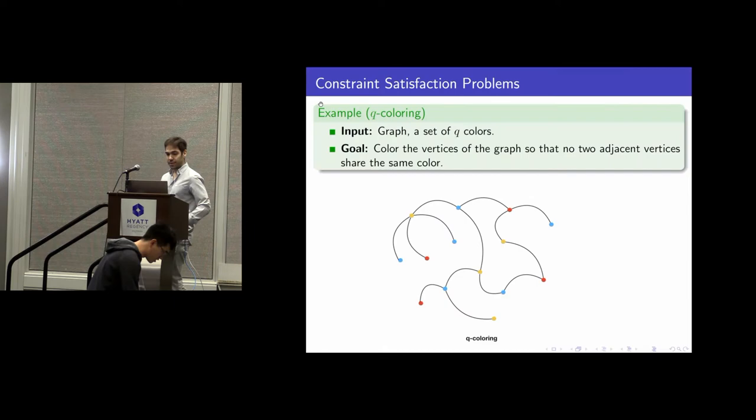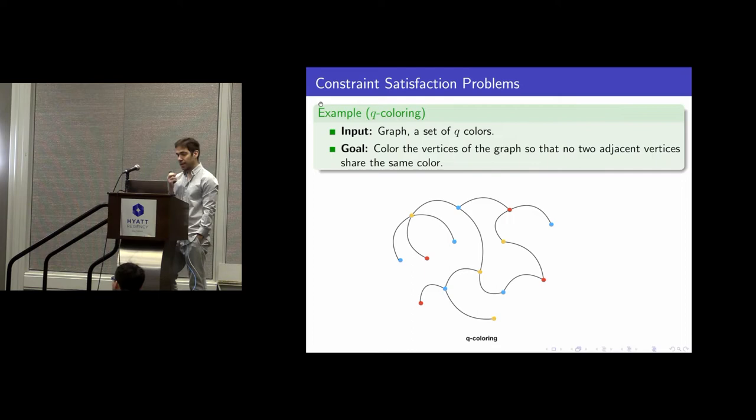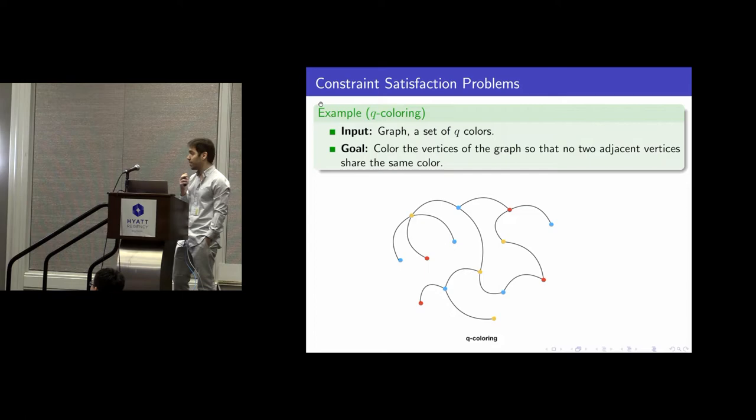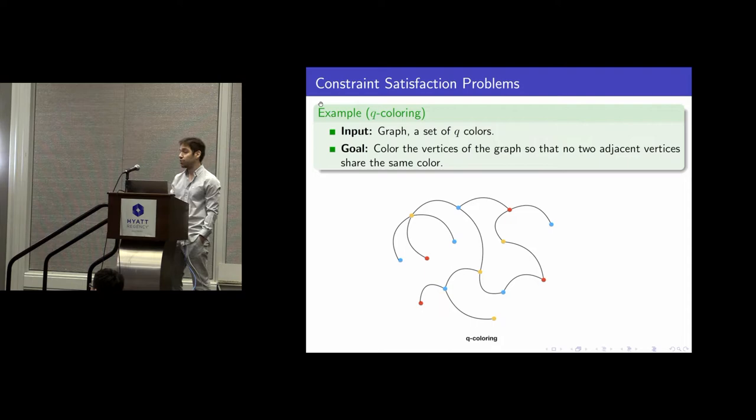This is a talk about constraint satisfaction problems and how to solve them in certain cases. One kind of problem I'm interested in is the Q-coloring, where the input is a graph and a set of Q-colors, and the goal is to find a vertex coloring so that no two adjacent vertices receive the same color. This is a constraint satisfaction problem in the sense that you have variables for the vertices and constraints for the edges.